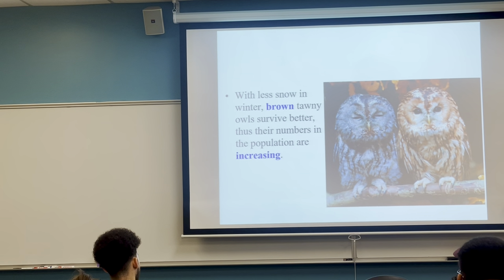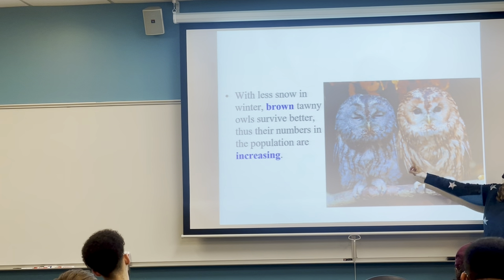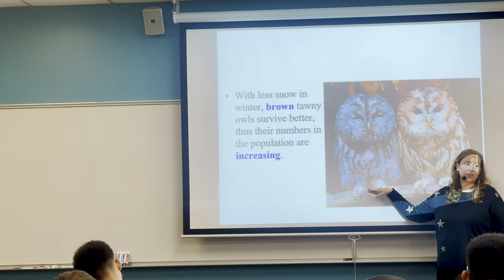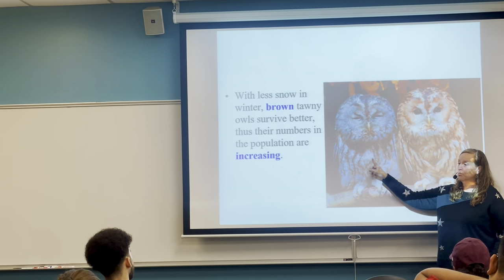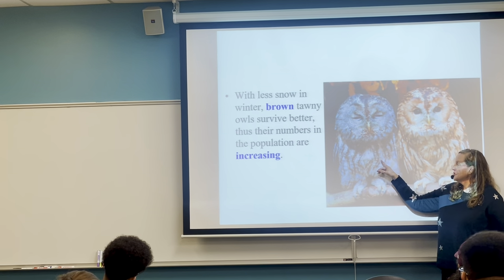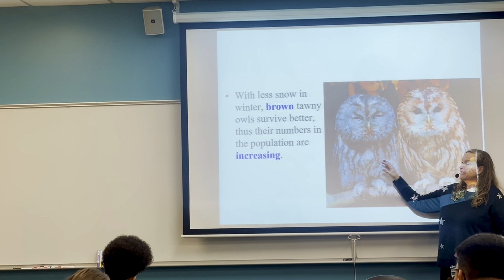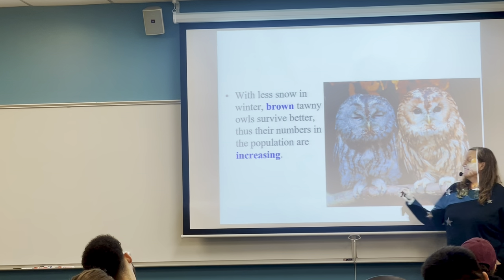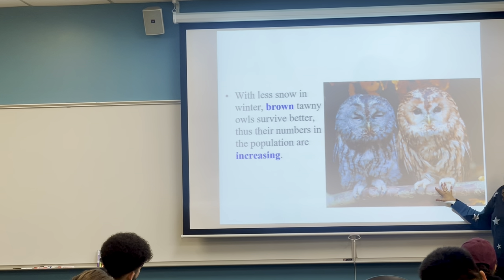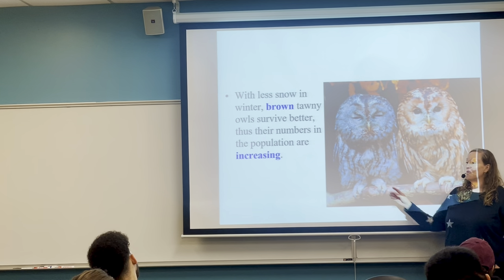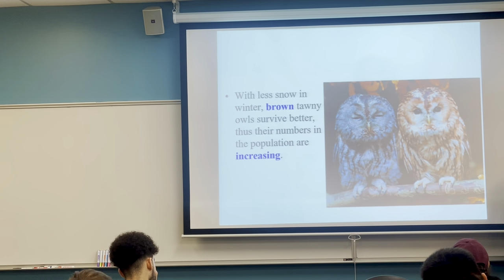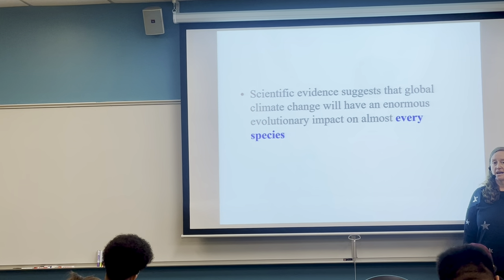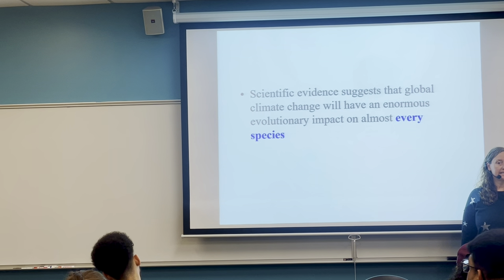These owls show two variants. When snow was more common in the area, the variant with more white on it blended in well with snowy tree bark. But with less snow, the white owl sticks out. The darker variant is now favored because it looks more like bark without snow. With less snow, the trait that is favored has recently changed. It is believed and supported by a lot of evidence that every single species on earth is being affected by humans accelerating climate change.